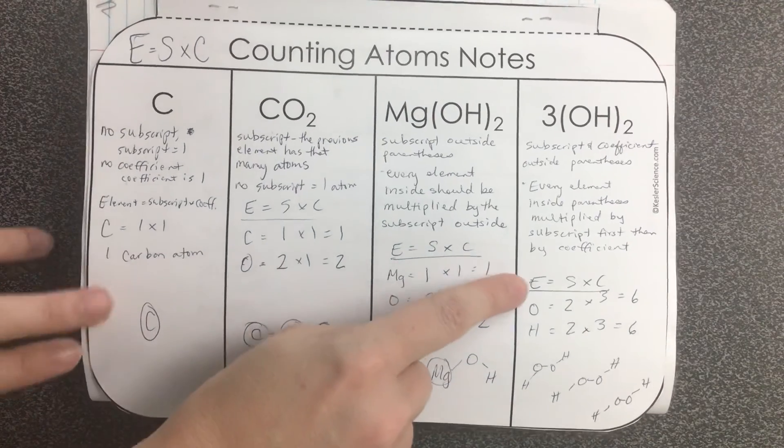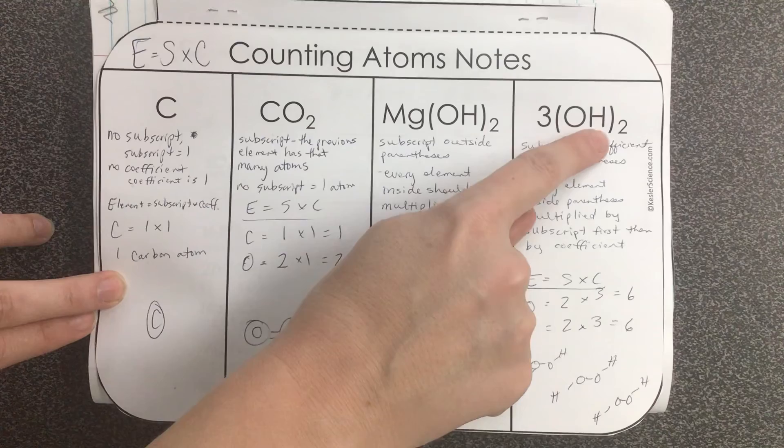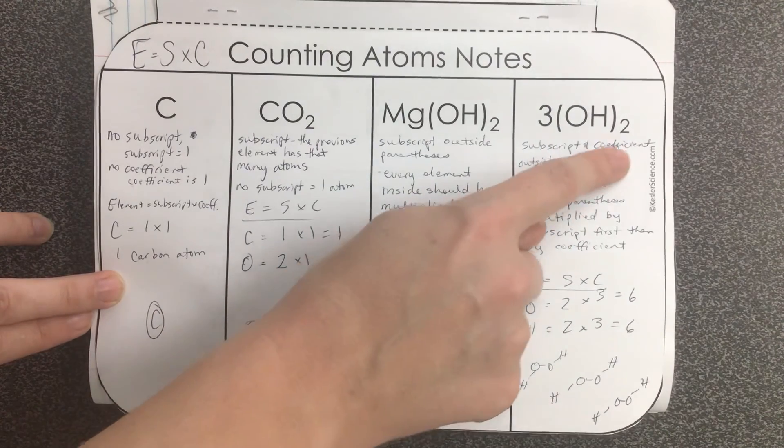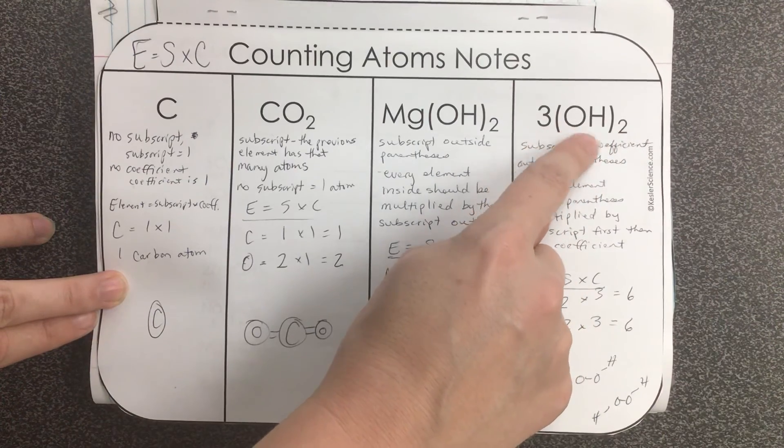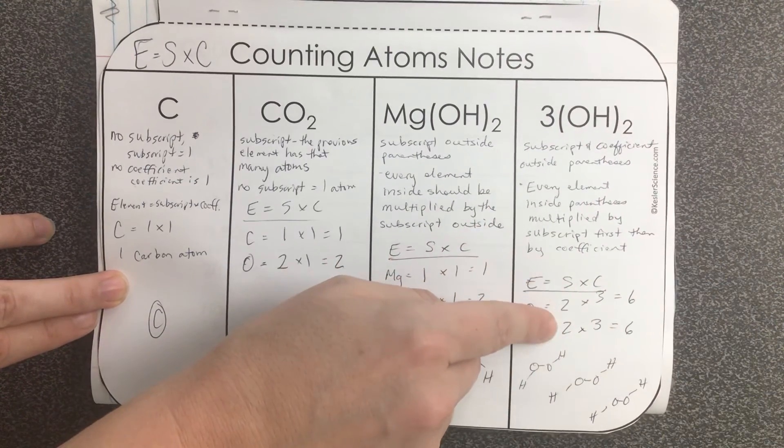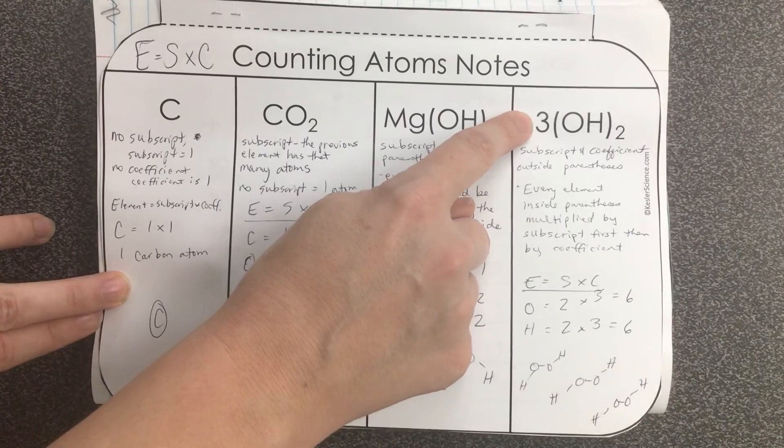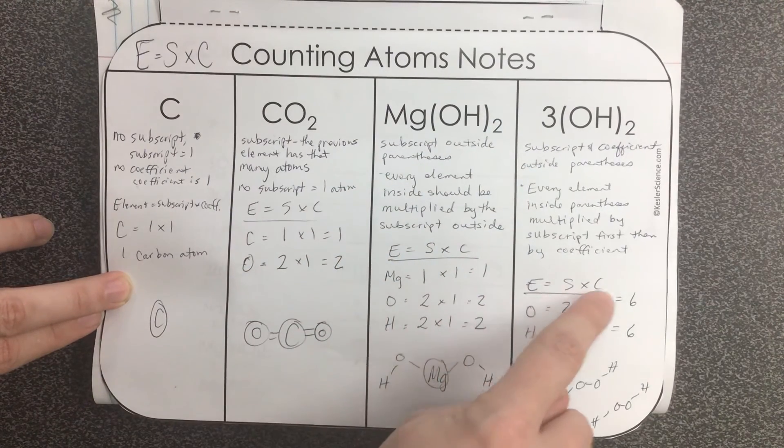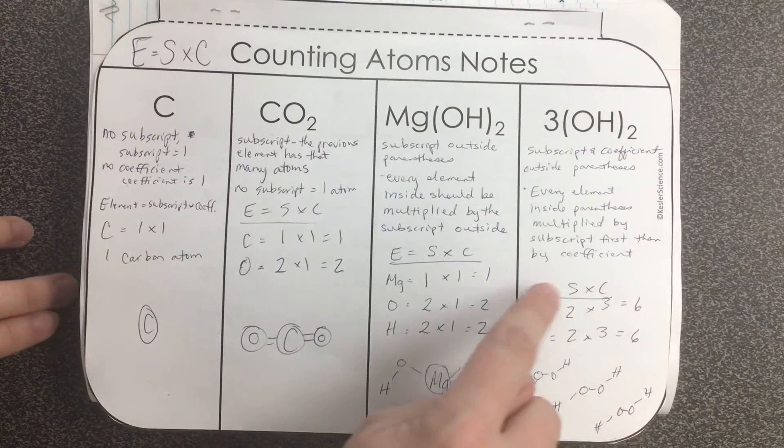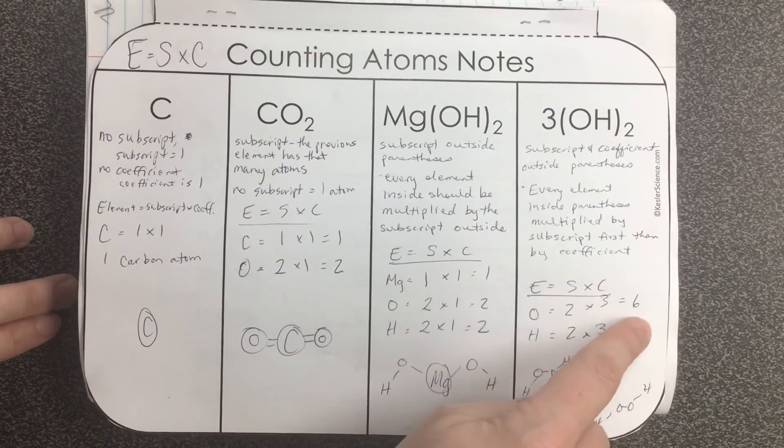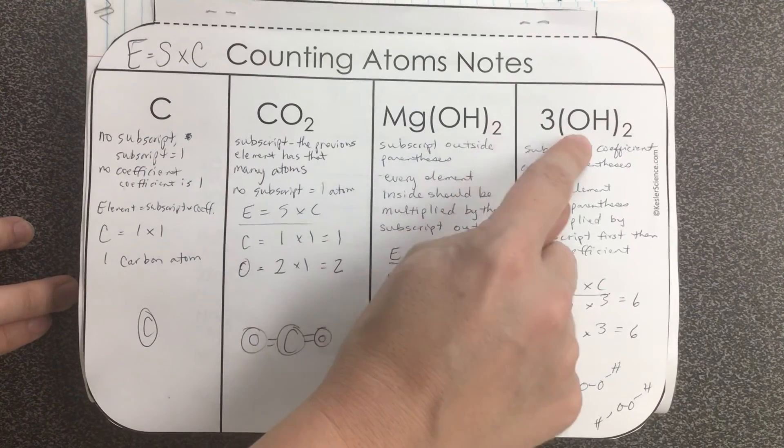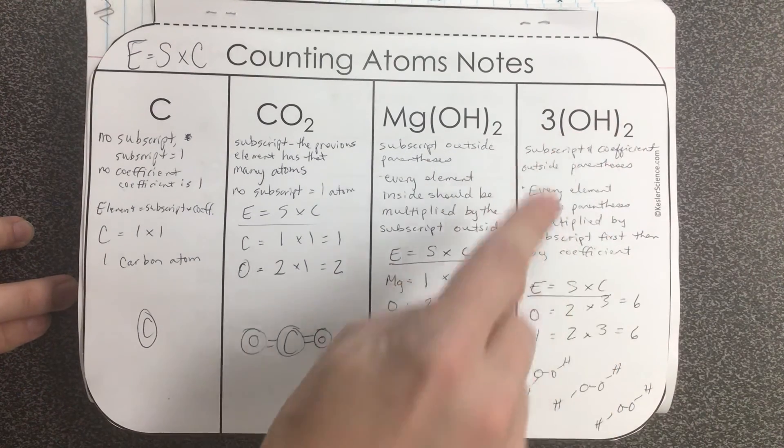So we write our elements, in this case oxygen and hydrogen. This two subscript applies to both of these since they're both in the parentheses: two. And then we multiply by our coefficient which in this case is three. In both cases two times three is six. So we have six oxygen atoms and six hydrogen atoms in three OH2 molecules.